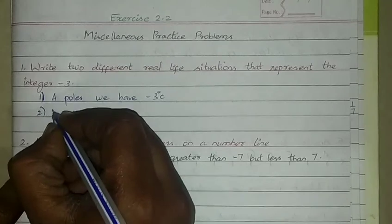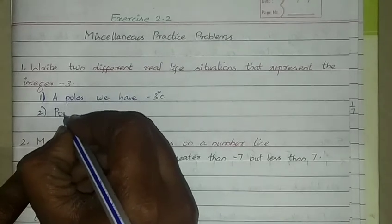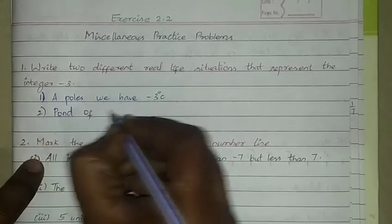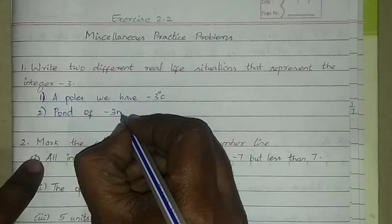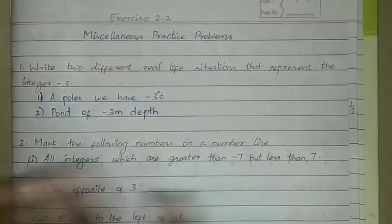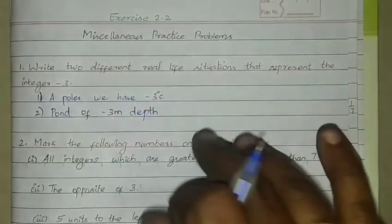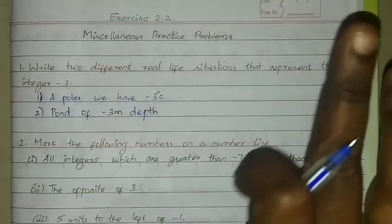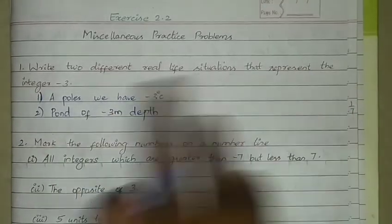Another example: a pond of 3 meter depth. A small pond, like a small water body below ground level.